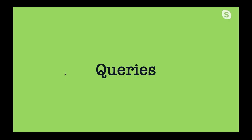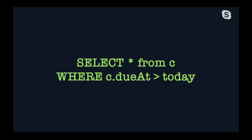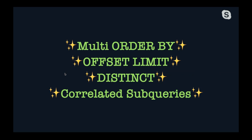Cosmos queries are SQL. The most basic is `SELECT * FROM c`. You can select individual attributes, filter with WHERE clauses — like picking a date greater than today — and use ORDER BY. The big supported operations are SELECT, WHERE, DISTINCT, ORDER BY, and aggregates like COUNT, MAX, MIN, and AVG. Coming soon: multi-ORDER BY, OFFSET and LIMIT (already out), DISTINCT (already out), and correlated subqueries. Be on the lookout for those relatively new features.